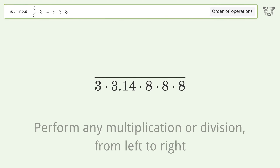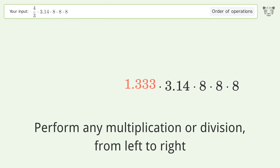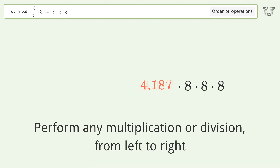Perform any multiplication or division from left to right: 4 over 3 equals 1.333; 1.333 times 3.14 equals 4.187.